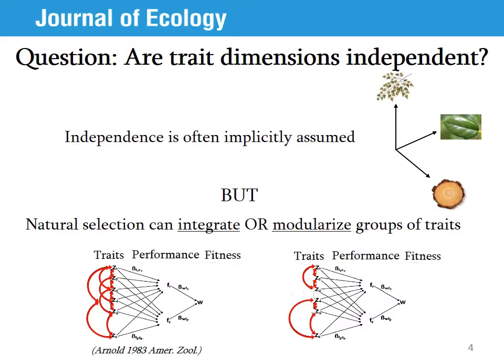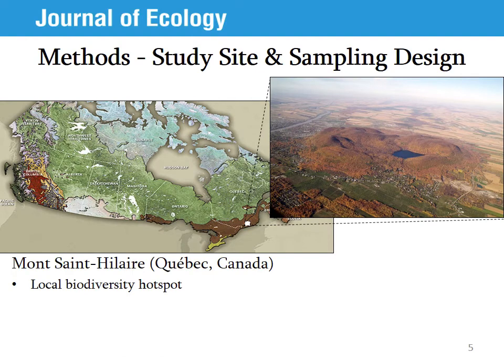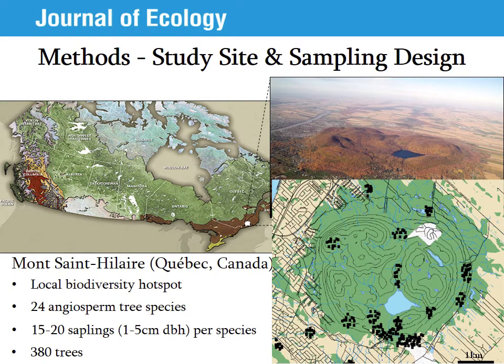Since the literature tends to assume that trait dimensions are independent, this is the hypothesis that I'm testing here. To answer this question, I studied trees on Mont Saint-Hilaire, a hill located 30 kilometers east of Montréal in Canada. We chose the study site because it has high local species diversity, being located in the mixed wood transition zone between the boreal and temperate forest, with a unique geological history. Together, these factors led to a broad range of habitats and high species diversity. We studied the 24 most abundant angiosperm tree species on the mountain, measuring 15 to 20 saplings per species — 1 to 5 centimeters diameter at breast height — giving us a total of 380 trees.